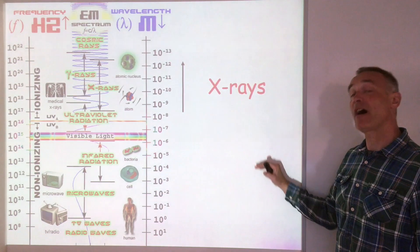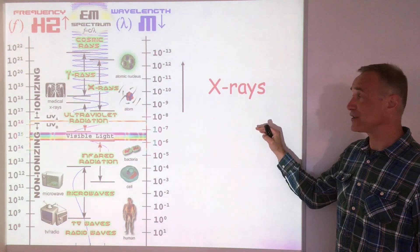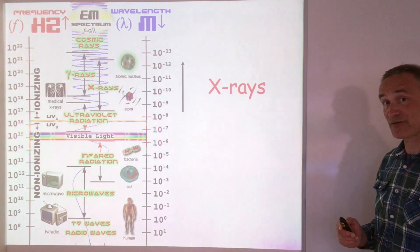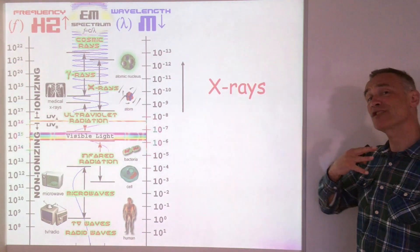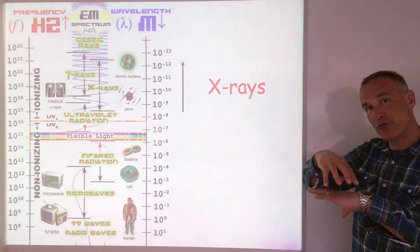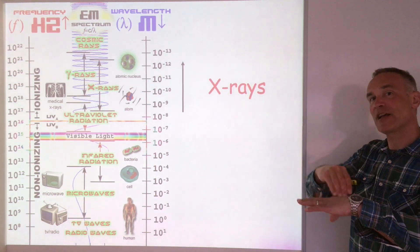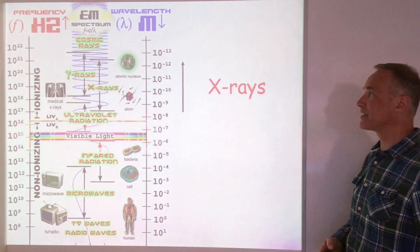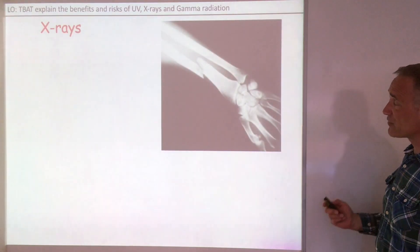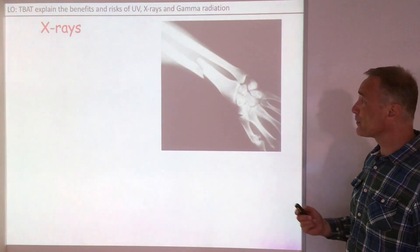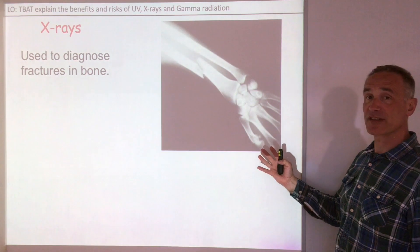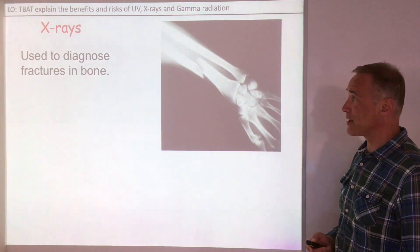Moving on to even higher energies — going up in frequency, we've got x-rays. They're much more penetrating than UV, which only goes through the surface and doesn't go deep into the body. X-rays are used to see fractures and breaks in bones.